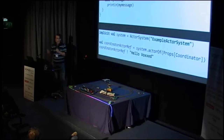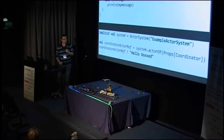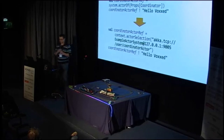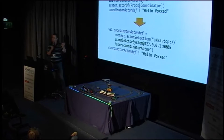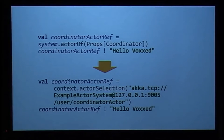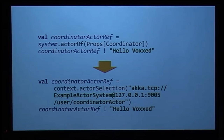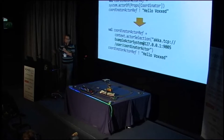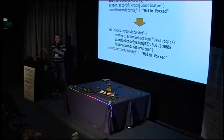Using remote actors is actually pretty similar to local actors — one of the strengths of Akka. It doesn't really matter if your actor is local or remote; there's only one small change, and that's in the actor reference. For a remote actor, you simply point to where the system lives on the network, get the same reference, and use it the same way as a local reference. This makes it very easy and quick to change your application's configuration, change where actors live, and call them across JVMs on the network.